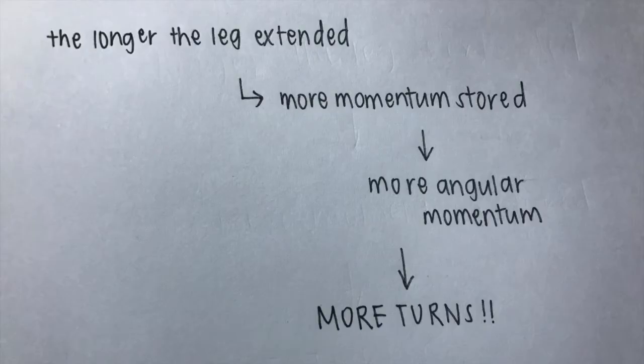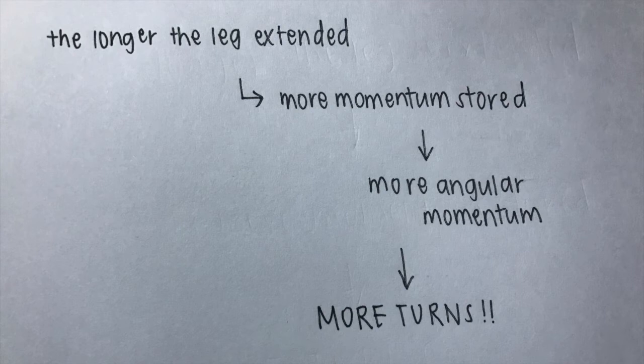The longer the leg is extended, the more momentum it stores and the more momentum returned to the body when the leg is pulled back in. More angular momentum means more turns before needing to replenish what was lost to friction.